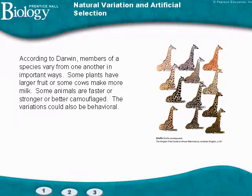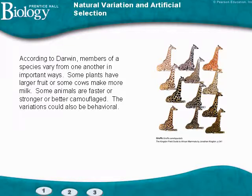The first thing to understand is that Darwin noticed there was variation among animals. I chose this picture of giraffes to show all kinds of different colors and sizes of spots — and you'd probably find giraffes with different length necks and legs. Farmers knew this from plants that produced bigger fruit or cows that produced better milk, and we know among ourselves that some of us are faster, stronger, or smarter.